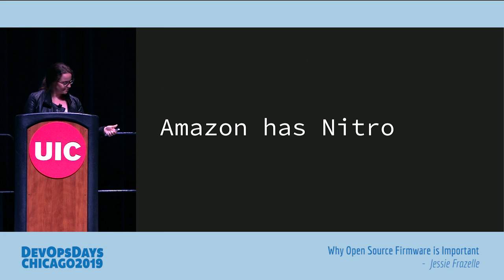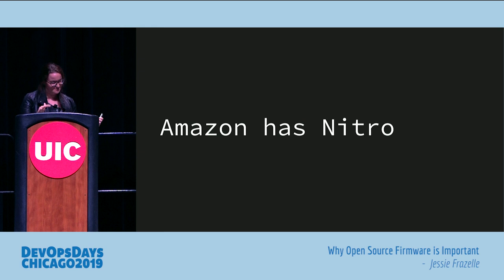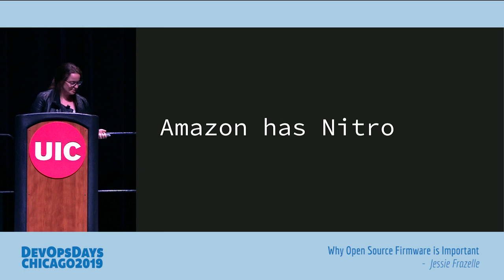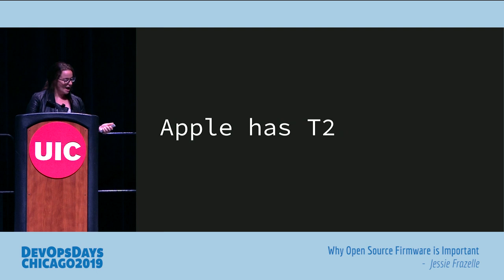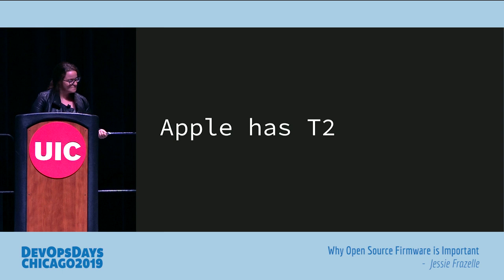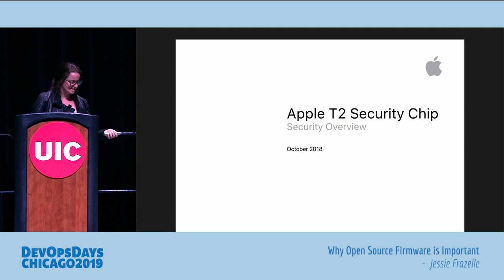Amazon has Nitro, which is part of their whole Nitro stack with a Nitro chip — if I recall correctly it's an FPGA. FPGAs are programmable logic arrays, which seems like a good fit for just verifying hashes. Apple has T2 — if you're familiar with Apple you probably know it's not great. There was a talk at Black Hat by people from Duo trying to reverse engineer it, and there's a paper online with some information.